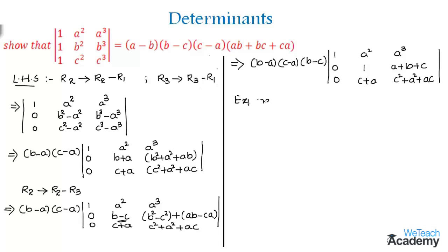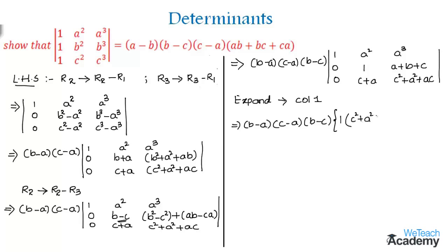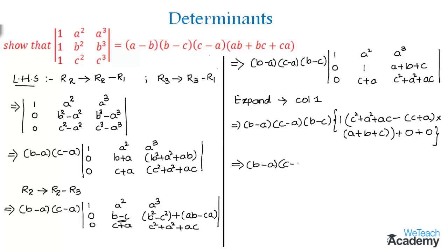Now let us expand the determinant along column 1. We get the factor (B minus A)(C minus A)(B minus C). Expanding along column 1, the first element is 1 multiplied by its minor. The elements with 0 in column 1 contribute nothing, so those terms vanish, giving us the product of the common factors times the resulting minor.